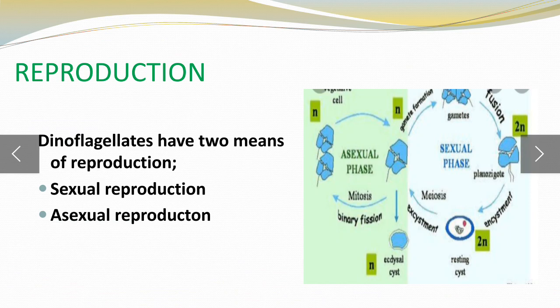Regarding reproduction, dinoflagellates have two types: sexual and asexual reproduction. In sexual reproduction, two parents are involved — one male and one female. In asexual reproduction, only a single parent is involved, occurring through binary fission. In sexual reproduction, two cells are present — one behaves like a male and one like a female — and they fuse with each other to form a new structure called a zygote.